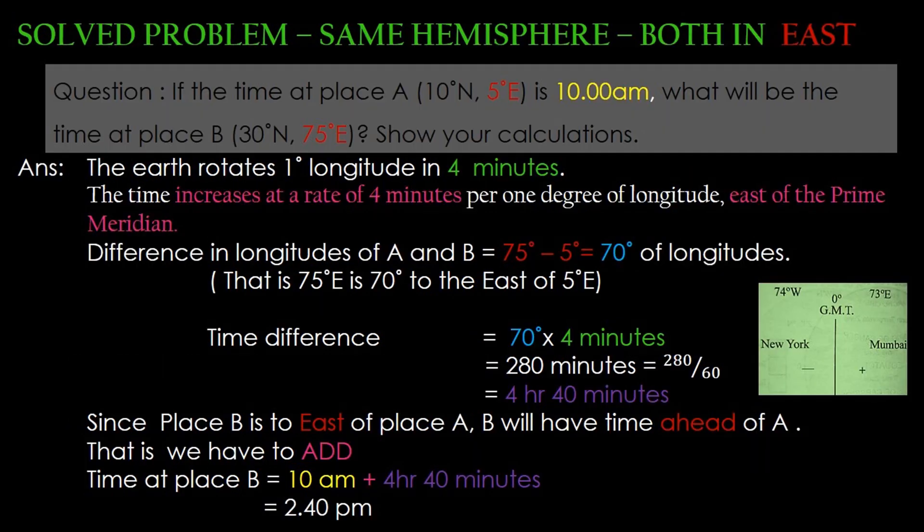Now let's see some solved problems on longitude and time. If the time at place A (10 degrees north, 5 degrees east) is 10 am, what will be the time at place B (30 degrees north, 75 degrees east)?